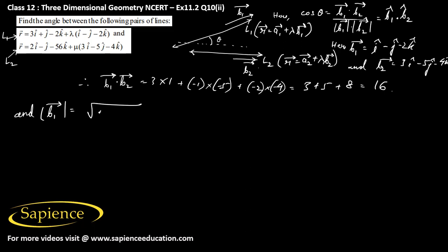Now mod of B1 vector equals square root of 1 squared plus 1 squared plus 2 squared, which is square root of 1 plus 1 plus 4, that is square root of 6.